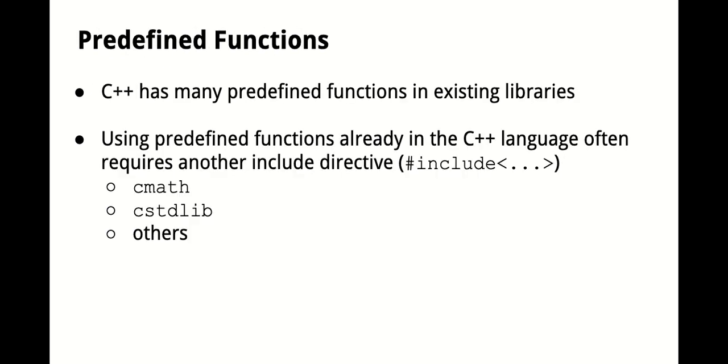C++ has a lot of predefined functions that are in existing libraries, so using these functions that are already in the C++ language will require us to use another #include directive in order to get access to them. We've had to use #include iostream to use the input and output commands pretty consistently throughout the year, and when we start to use either mathematical functions or other functions, we'll rely on these libraries that already exist, that people have written the code for these functions in, and we'll bring them into our program. So you might use #include cmath for some math functions, or #include the C standard library and even some others as you go further into your coding career.